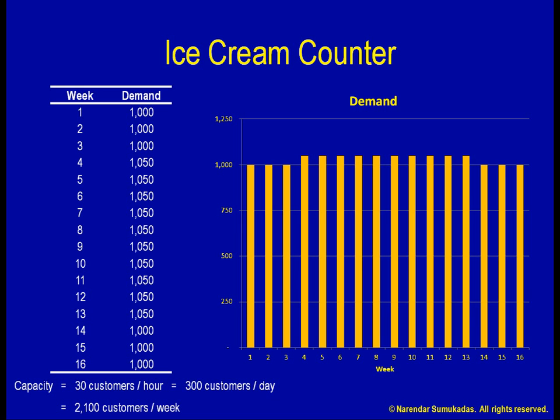That means I have more than enough capacity to meet my weekly demand. Then how is it that I am still turning customers away? I am really puzzled. My problem here is that I am trying to match my demand and capacity on a weekly basis. What does that mean? Let us say a customer shows up on Saturday and asks for an ice cream.